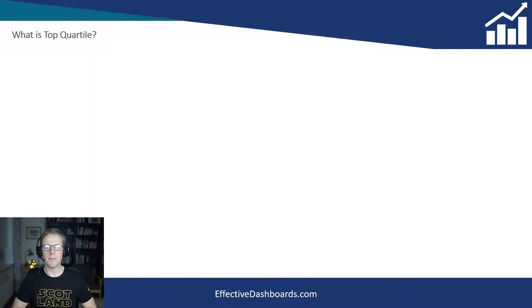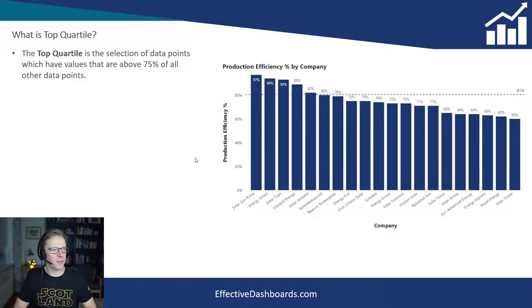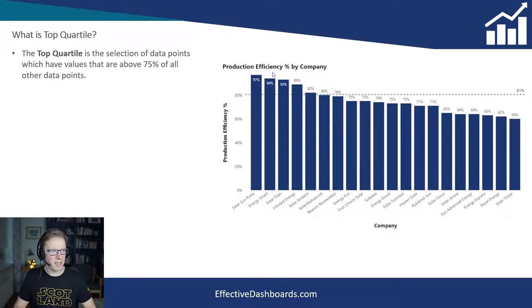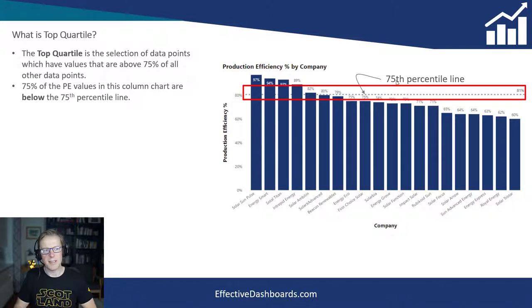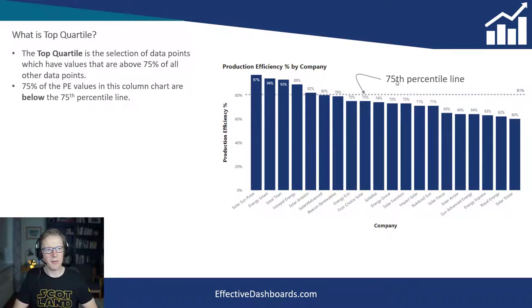The first thing I want to cover is a bit of theory around what it means to be in the top quartile — so how is it defined? Looking at this chart here, the top quartile is the selection of data points — thinking of each bar as a data point — which have got a value assigned to them. In this case it's production efficiency, which is above 75% of all of the other data points. We can see there's a line here, known as a percentile line — the 75th percentile line.